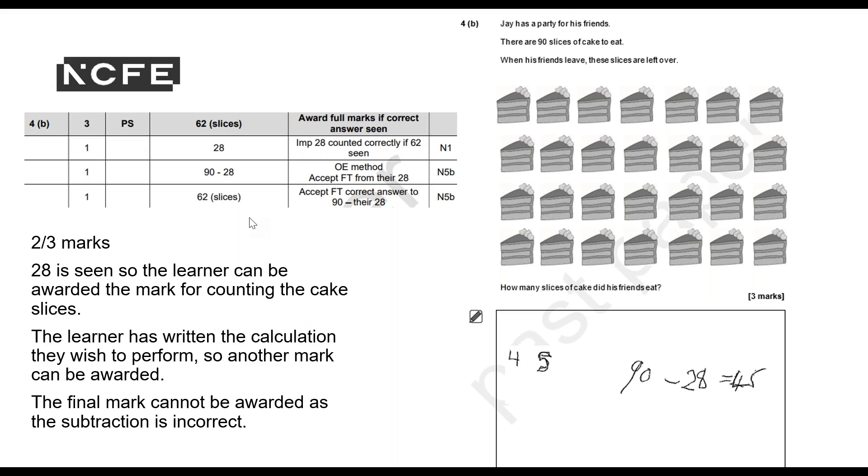Now, important to note that with this particular question, had the learner shown no working at all and just written 62, you could have given them all three marks. That's important for you to know when you're marking your learner's work. Because depending on what the mark scheme says, they don't always have to show their full working if they've got the correct answer. Obviously, this learner has been helped by showing their working.